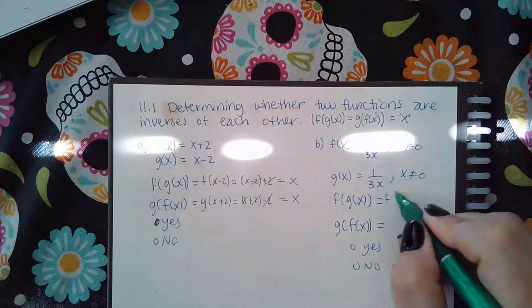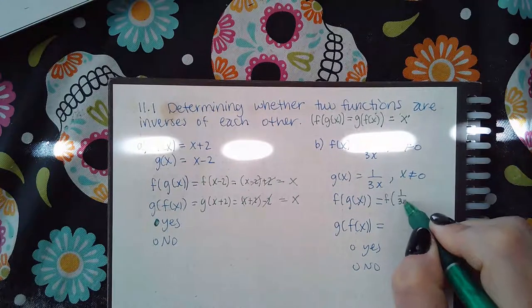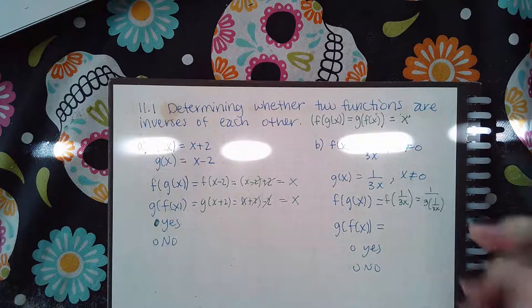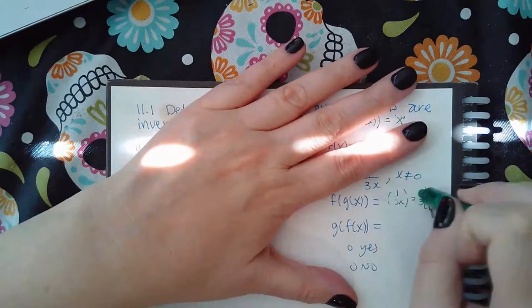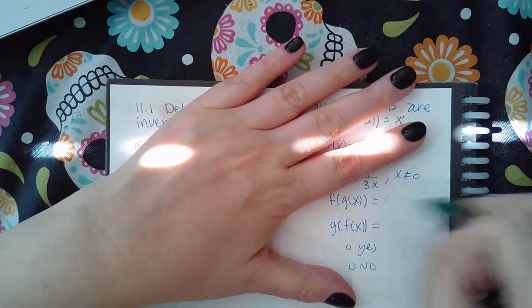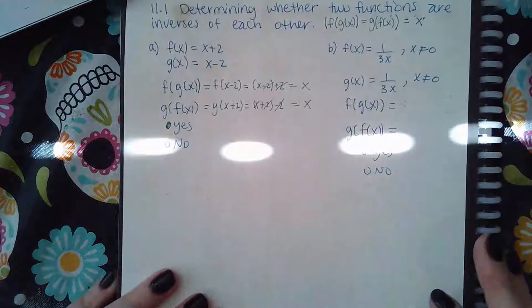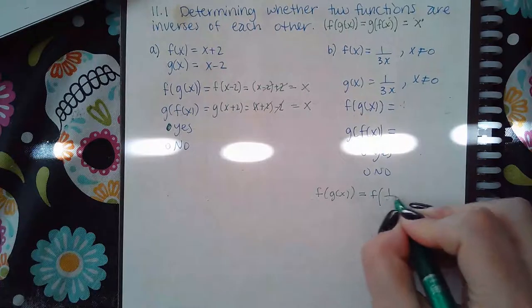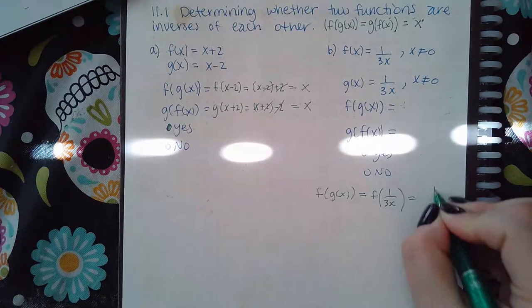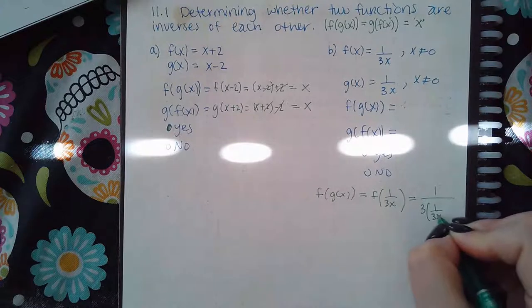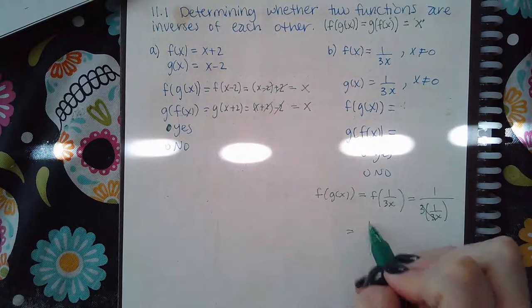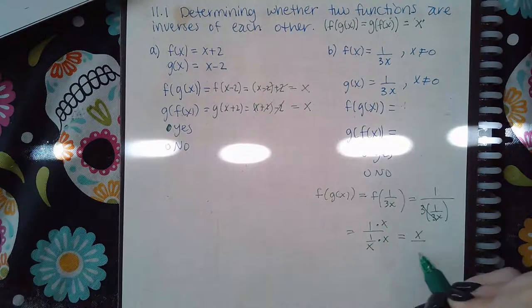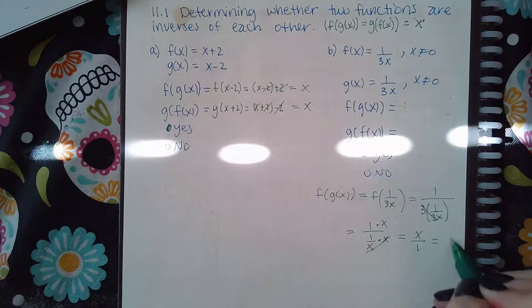Now for this example we do f of one-third x, so we get one-third times one-third x. This one's going to have to be done on the side because I don't have enough room. So f(g(x)) is f of one-third x which is one-third times one-third x. The threes cancel, we get one over one over x, but if I multiply by the common denominator I get x over one which is just x.